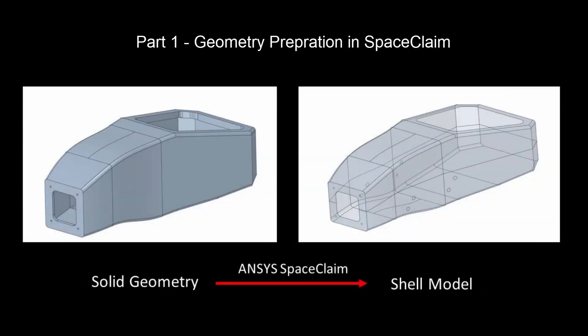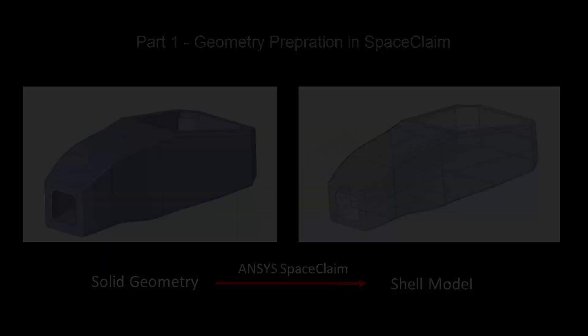Part 1 is focused on preparing the chassis for composite layup by extracting shell geometry and de-featuring in SpaceClaim.